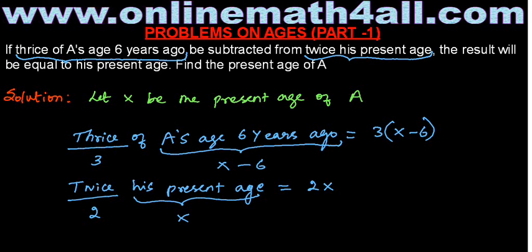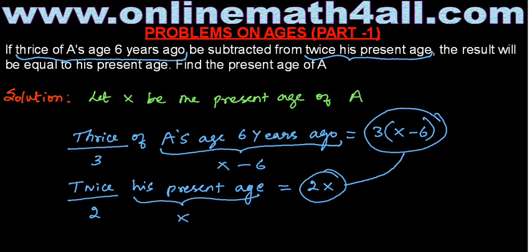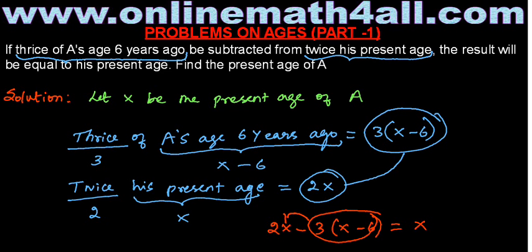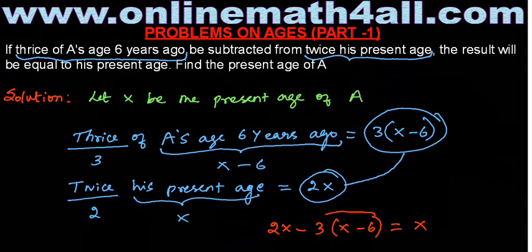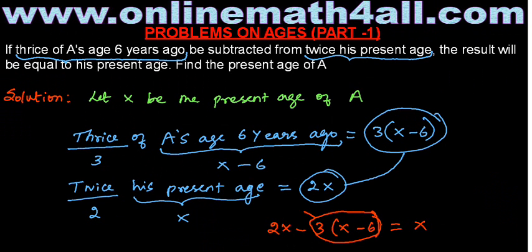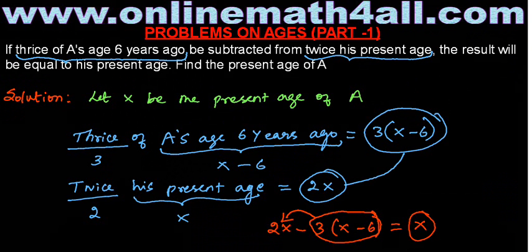Now, what the question says is: thrice of A's age 6 years ago has to be subtracted from twice his present age, and the result will be equal to his present age. So the equation is: 2X minus 3 times (X minus 6) equals X. Students, be clear with this equation — I just used the given information.